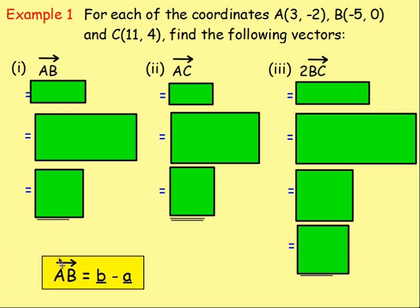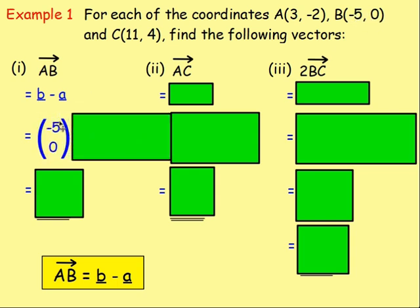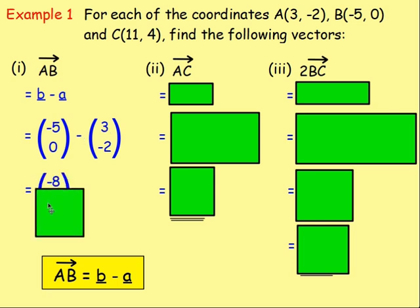Brilliant. It's always the second vector minus the first. So AB is going to be B take away A. Which means if we write down these points as a vector, B, the position vector of point B, it's negative 5, 0. So we write it down as a vector with the x coordinate and the y coordinate. Negative 5, 0. We're taking away A. A is the point 3, negative 2. So we will take away 3, negative 2. If we work that out, negative 5 take away 3 gives you negative 8. And 0 take away negative 2 is 2. Well done.